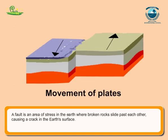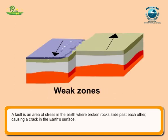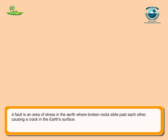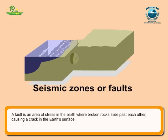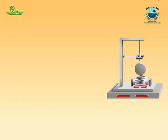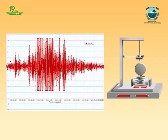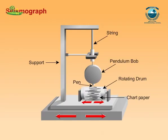The boundaries of the plates are the weak zones where earthquakes are more likely to occur. The weak zones are also known as seismic or fault zones. Recording the intensity with a seismograph: the tremors produce waves on the surface of the earth.